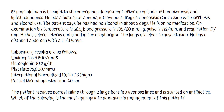He has a history of anemia, intravenous drug use, hepatitis C infection with cirrhosis, and alcohol use. The patient says he has had no alcohol in about five days and is on no medications. On examination, his temperature is 36.5, blood pressure is 105/60, pulse is 112 per minute, and respirations are 17 per minute. He has scleral icterus and blood in the oropharynx. The lungs are clear to auscultation. He has a distended abdomen with a fluid wave. The laboratory results are as follows.